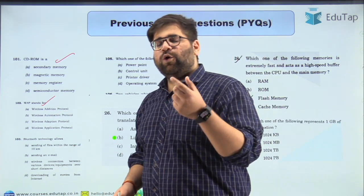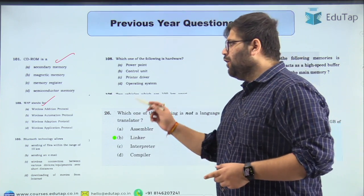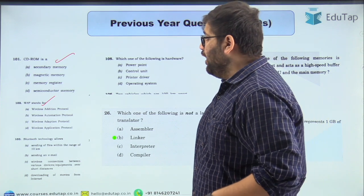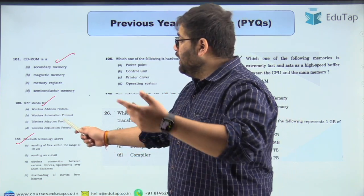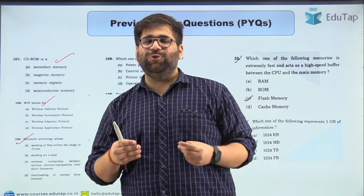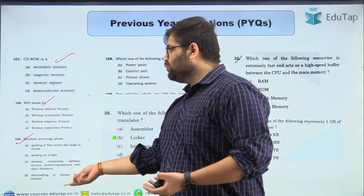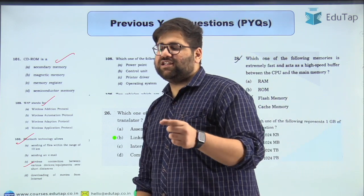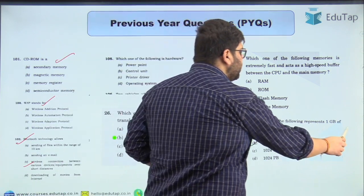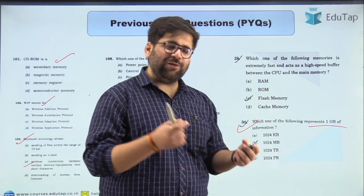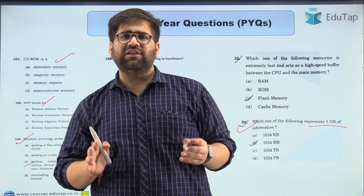A Bluetooth question was also asked. If you look at the options, the first option says 'sending files within the range of 10 km' — we all know Bluetooth cannot work up to 10 km, so option A gets automatically removed. The correct answer is C — Bluetooth works only for shorter distances. Similarly, from the 2021 paper, a question asked how many MB are in 1 GB — a very general knowledge question that everyone uses daily.